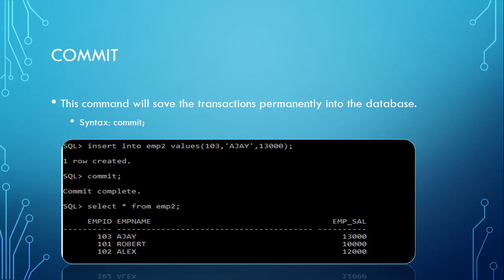Until a commit is issued, the data will remain in a buffer area. When you give the COMMIT command, it will be completely updated into the database. So whenever we give a COMMIT, it means the record is committed and updated.